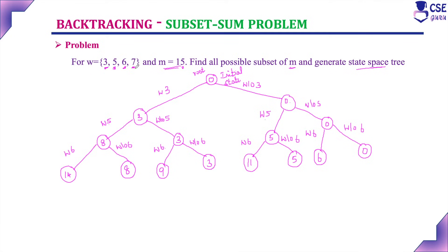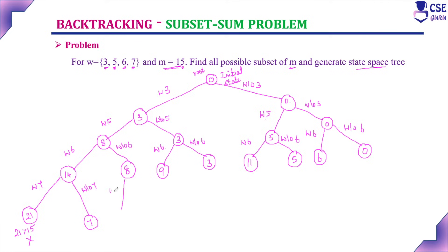Next, consider the fourth element 7. With 7 added to 14: 7 + 14 = 21, which is greater than the required sum of 15 — this is a dead end. Without 7: value stays 14. With 7 added to 8: 7 + 8 = 15, which equals our required sum — we found a solution! Without 7: value stays 8. We must check other branches for additional solutions.